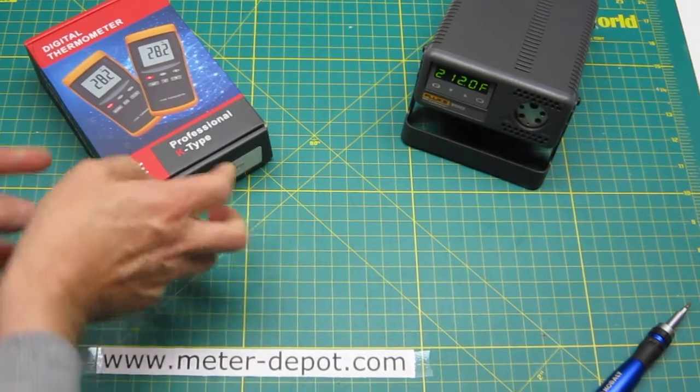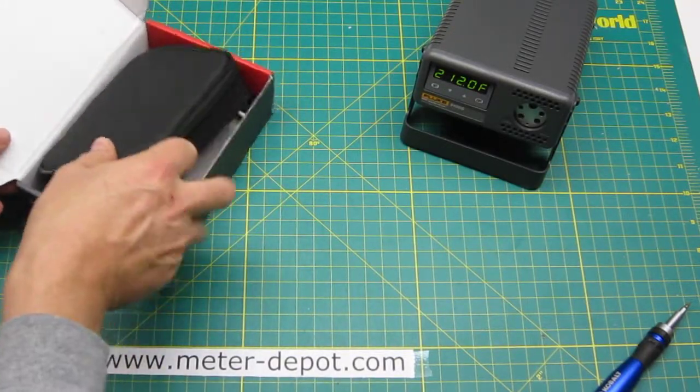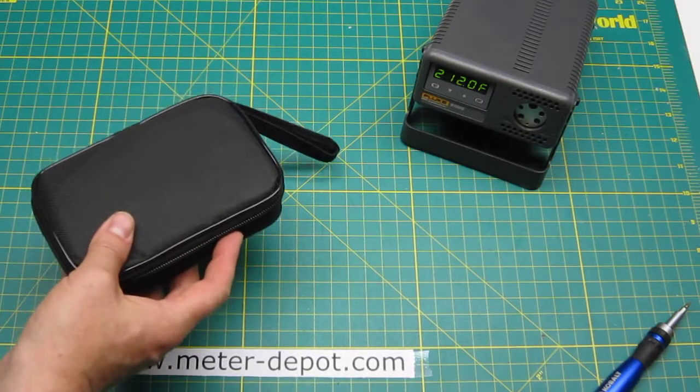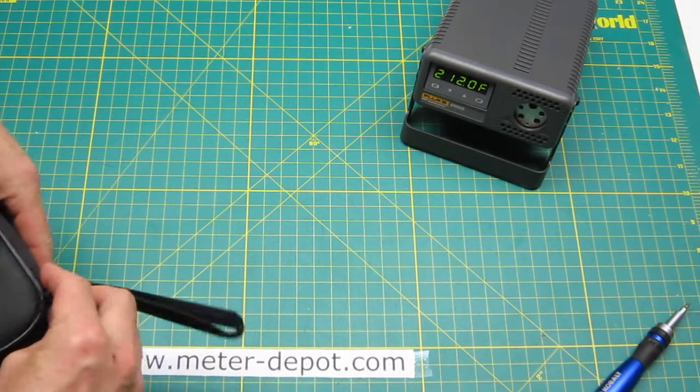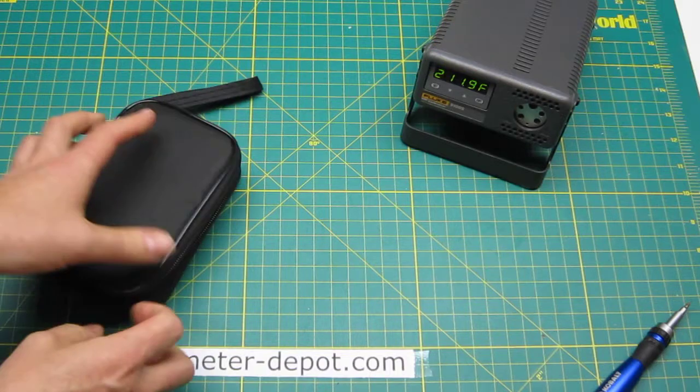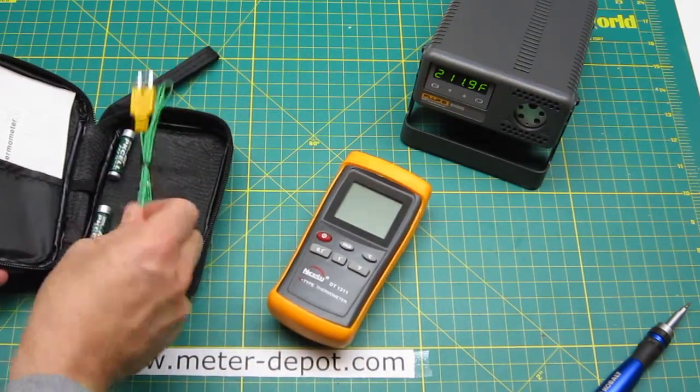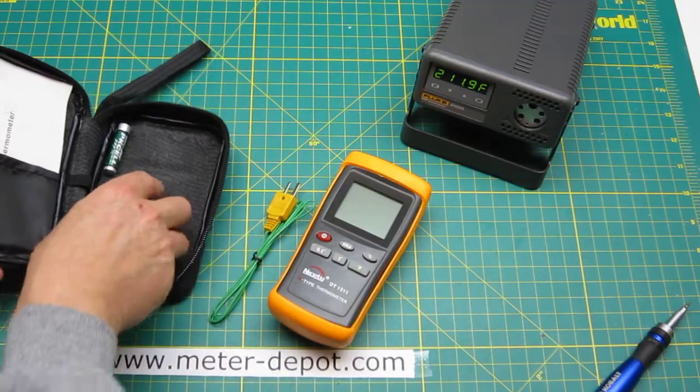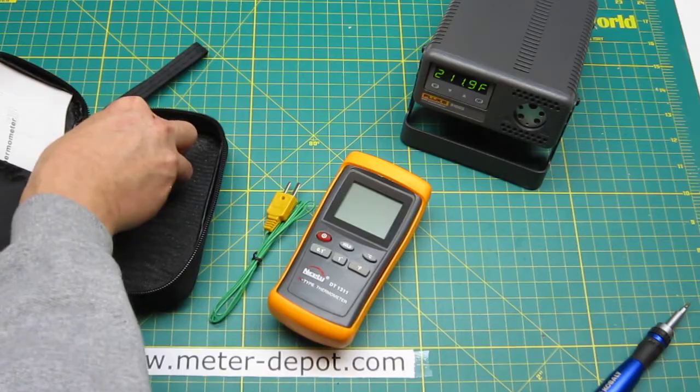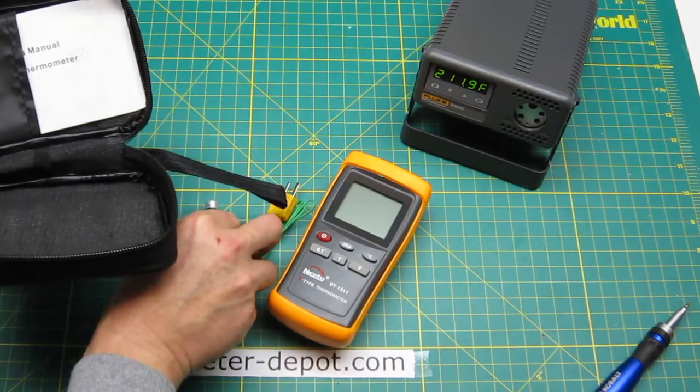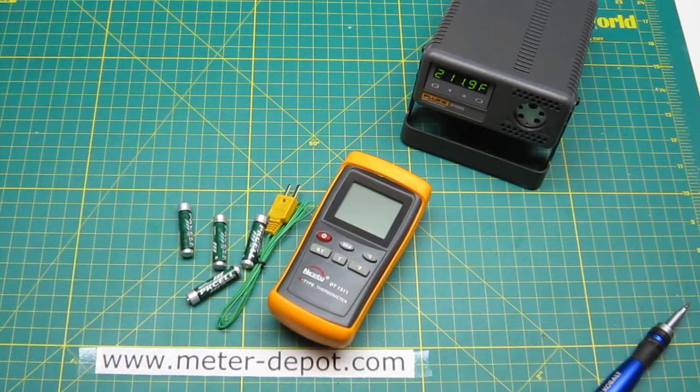The meter comes in this little box and has a black carrying case included. Inside you will find the thermometer itself, a K-type thermocouple, four AAA batteries, and the manual which we don't need right now.